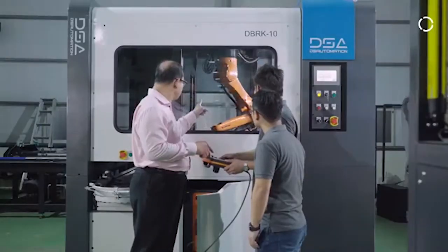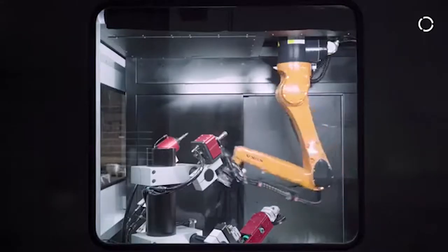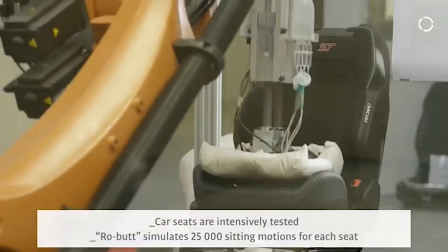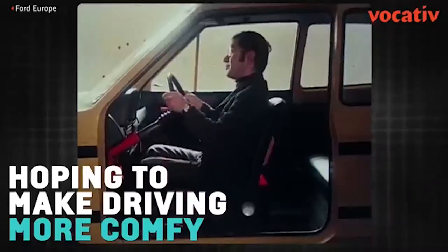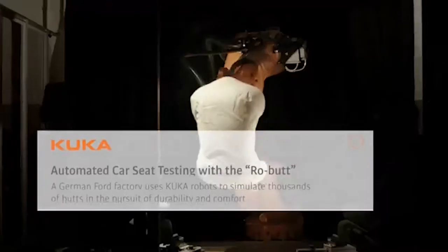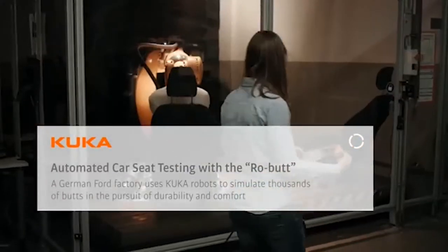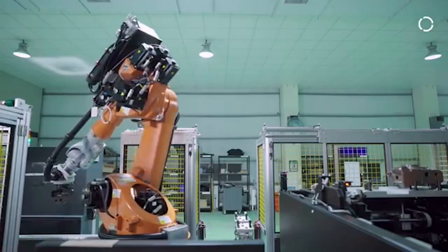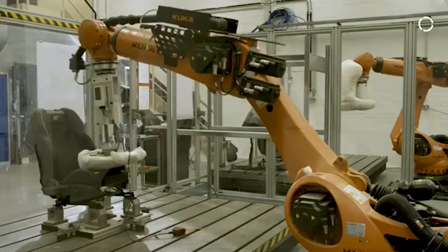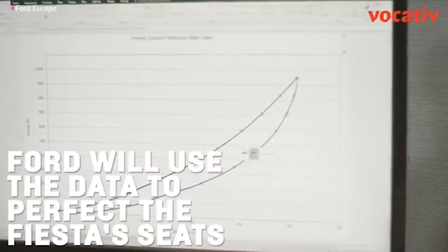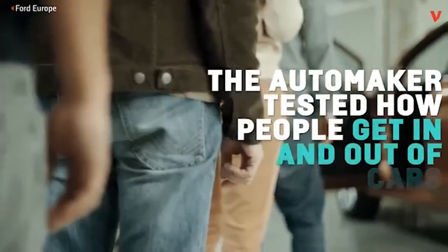KUKA's robot can, according to the company, simulate thousands of butts in the pursuit of durability and comfort. Two of the robots are used at a Ford development center in Germany to evaluate new car seats. The tests are very comprehensive, consisting of around 25,000 simulated sitting motions for each new seat design. Or, as KUKA puts it, pleasing all the butts on the planet is serious business.